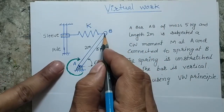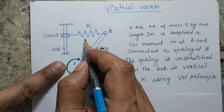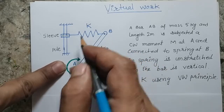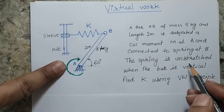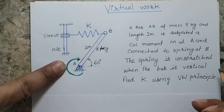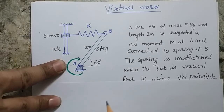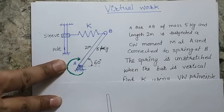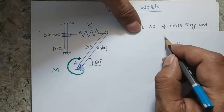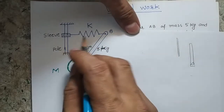However, there is a spring connected at this point and because of the spring the system is in static equilibrium. In the current position the spring is stretched with a certain extension. From the question, the spring is unstretched when the bar is vertical. This means initially the bar is vertical and the spring is always in the horizontal configuration — connected to a pole or sleeve.